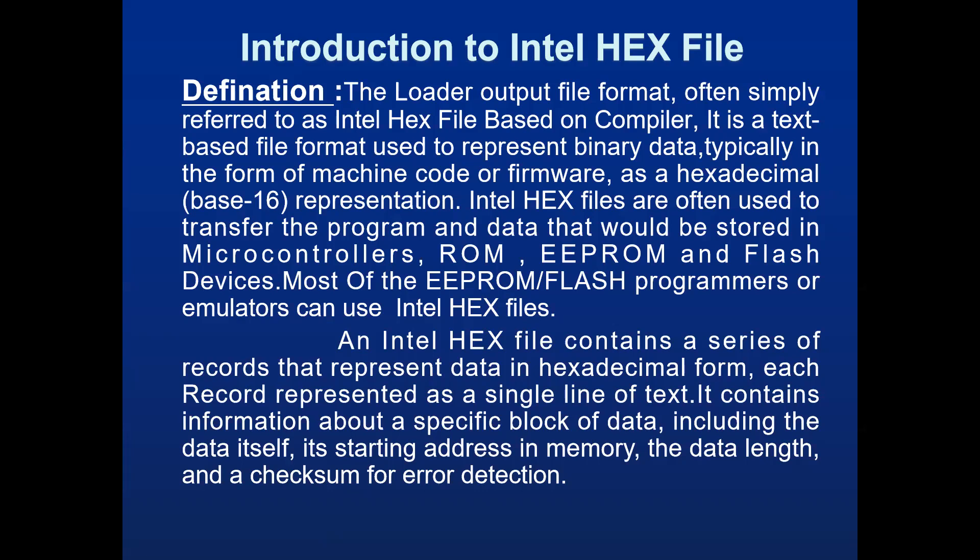What is the main HEX file record? A number of records are available. Each line represents one record, and each line starts with a colon. Each record contains: data length, starting address of the data field, type of the data field, then data, and checksum.